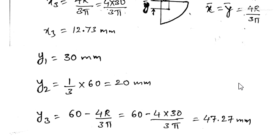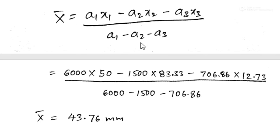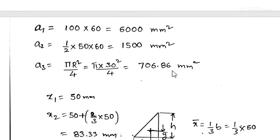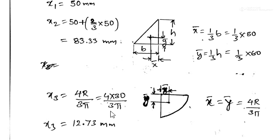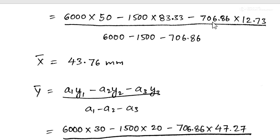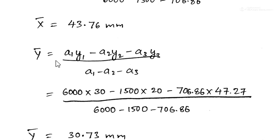Now we calculate X-bar using the formula X-bar = (A1·x1 − A2·x2 − A3·x3) / (A1 − A2 − A3). Substituting: A1=6000, x1=50; A2=1500, x2=83.33; A3=706.86, x3=12.73. Simplifying, we get X-bar = 43.76 mm.